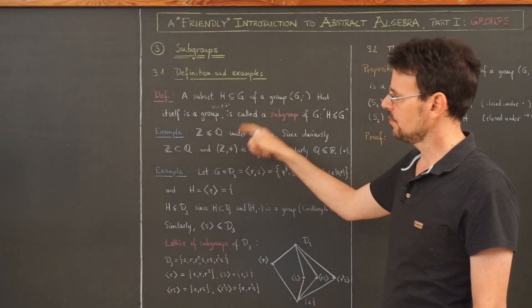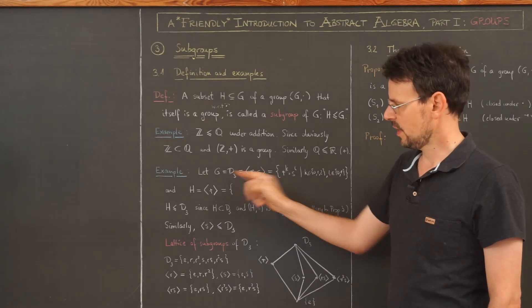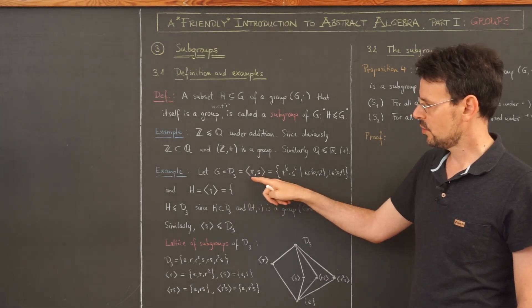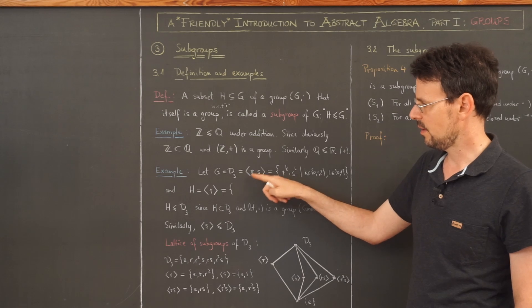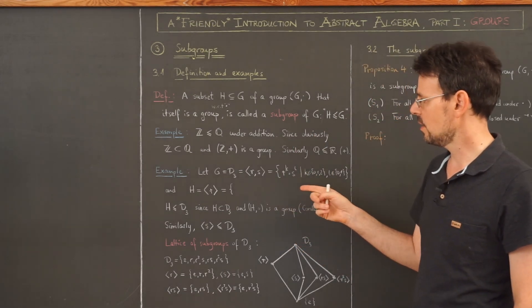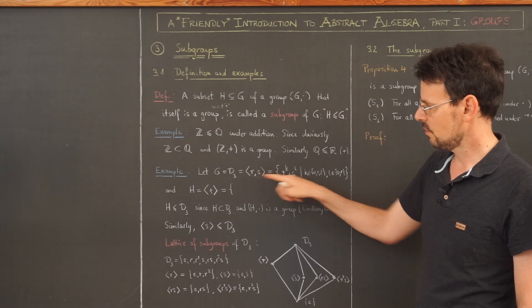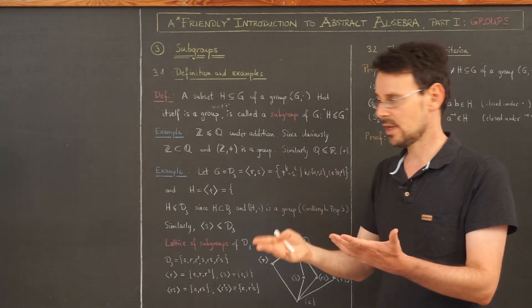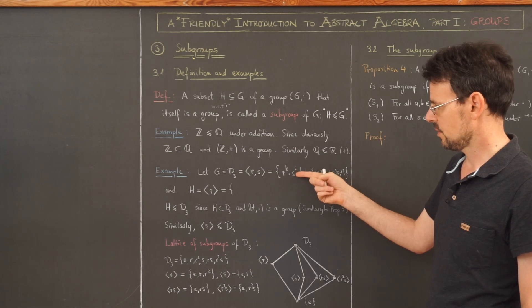Those are infinite groups. For an example with a finite group, we take the dihedral group of an equilateral triangle. We showed in the exercises that this group is generated by the rotation r by 120 degrees and the reflection s about any of the three symmetry axes of the triangle. All elements of this group can be written as r^k composed with s^l, where k runs from 0 to 2 because r cubed is the identity, and l is either 0 or 1 because s squared is the identity.